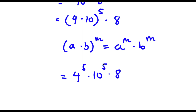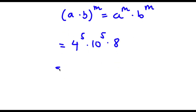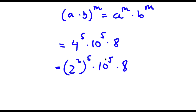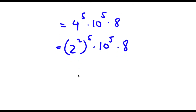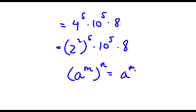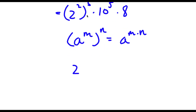Now I have this times 8. Now 4 is the same thing as 2 squared. So if I replace 4 with 2 squared, I get 2 squared to the power of 5, times 10 to the power of 5, times 8. Now if I have something in the form a to the power of m to the power of n, this is the same thing as a to the power of m times n. So 2 to the power of 2 to the power of 5 equals 2 to the power of 10, because 2 times 5 is 10.